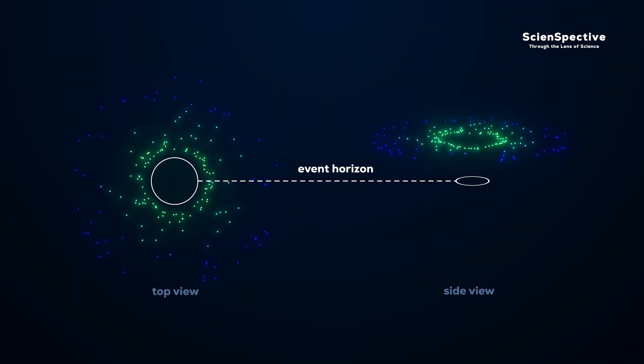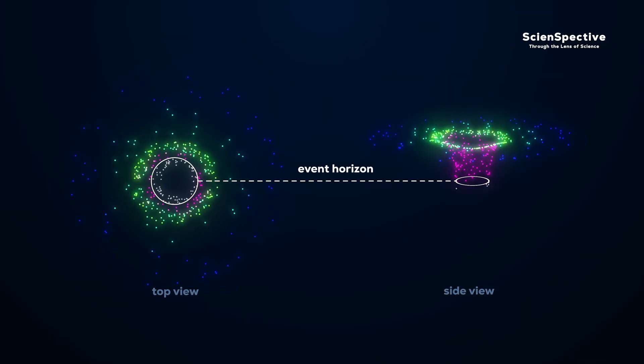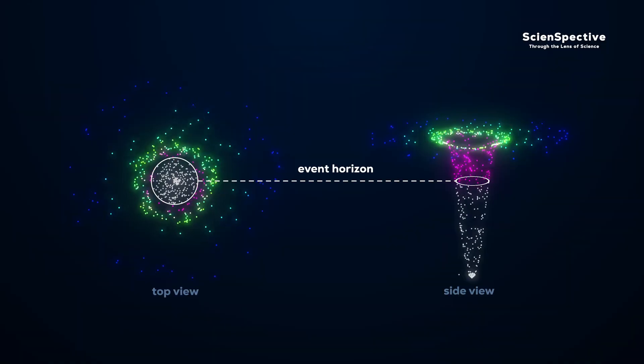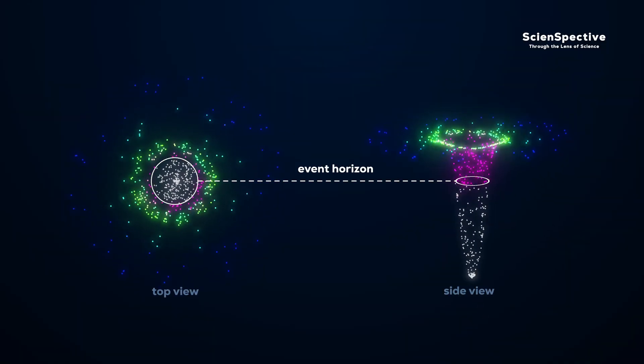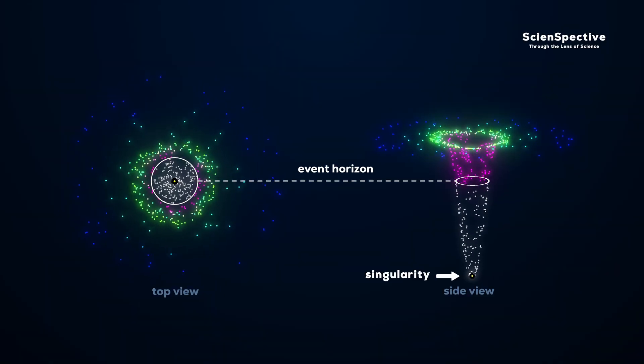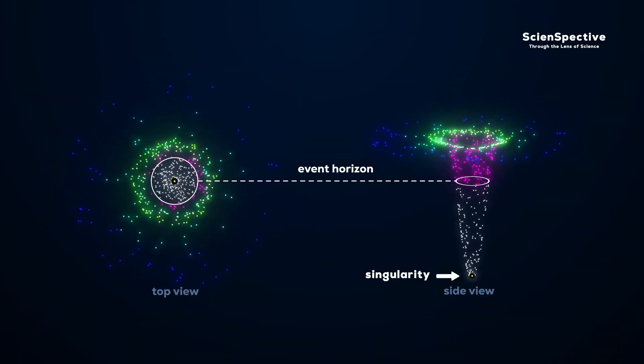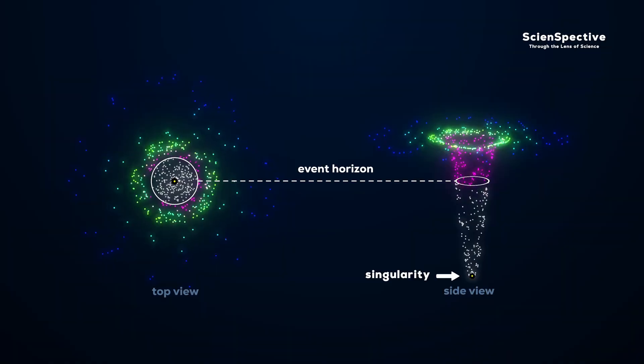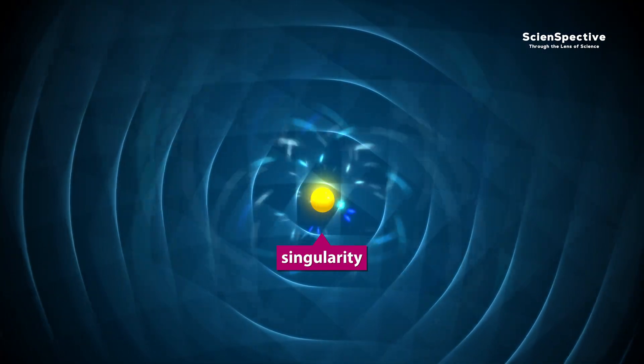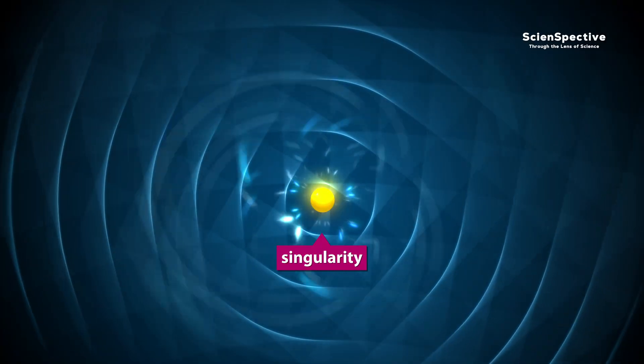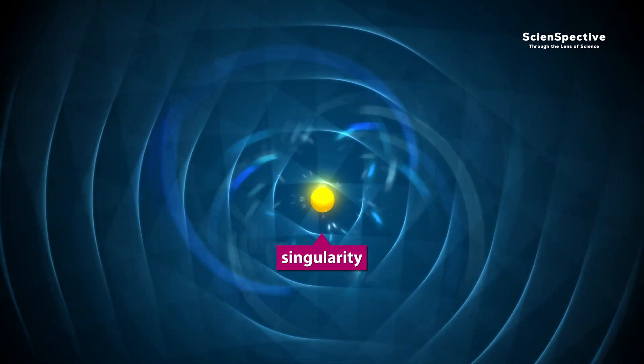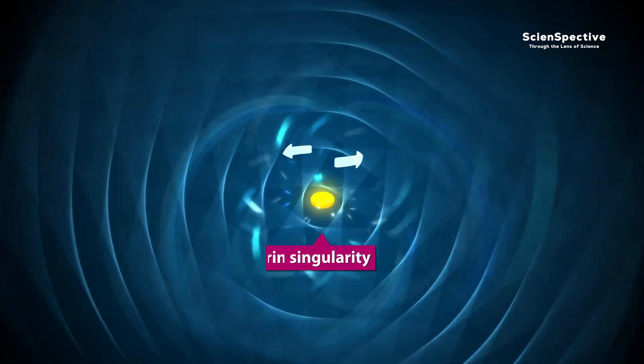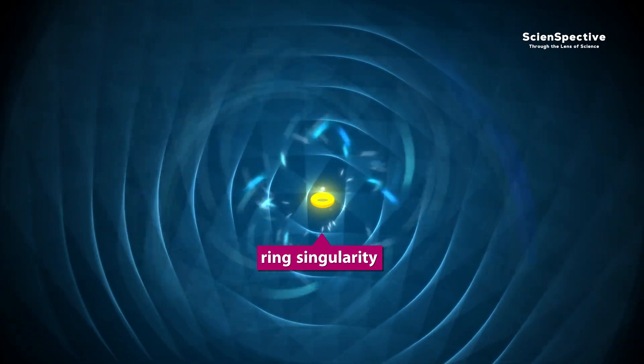If a black hole consumes something, its information can never escape. This wouldn't be such a big deal if black holes lived forever. Then we could simply say the information still exists somewhere inside the event horizon. We just can't see it. This somewhere is usually described as a singularity, a point of infinite density and zero volume at the black hole's center. Singularity sounds impressive, but it's meaningless. It just indicates that the mathematical model we use breaks down inside them. No physicist seriously believes that a real singularity forms inside a black hole. A better idea for rotating black holes is that the singularity is stretched by extreme forces into a ring-like shape.